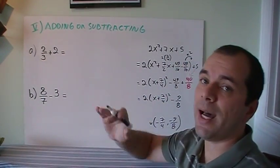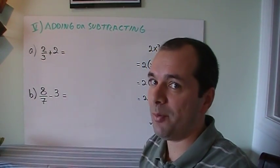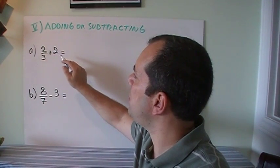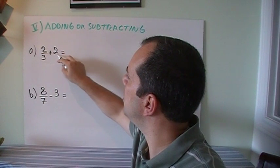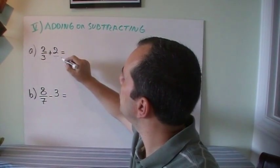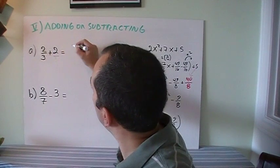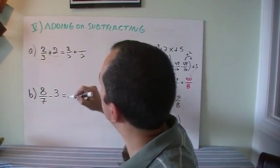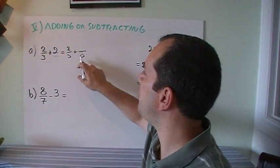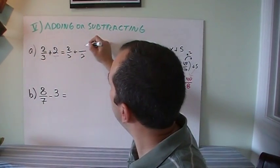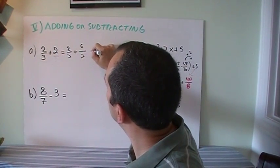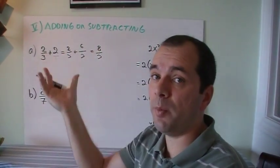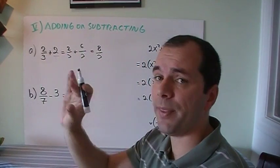And lastly, we just got to add and subtract. And adding and subtracting is the most complicated one. We've got to get a common denominator, right? So if I got 2/3 plus 2, remember that this is like 2/1. So then I want to get 2/3 plus something over 3. So 1 times 3 is 3, 2 times 3 is 6. So therefore this is just 8/3. And when we add or subtract, remember the denominators stay the same. We just add the tops.